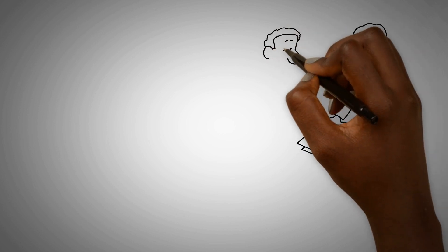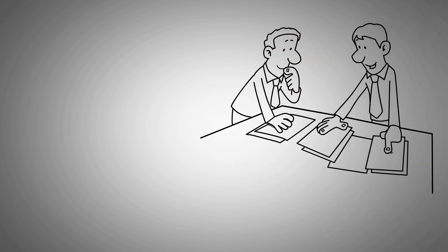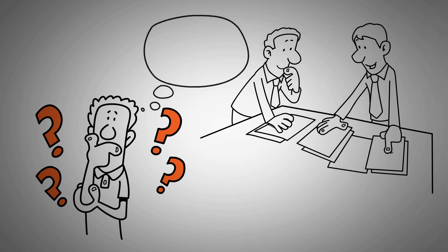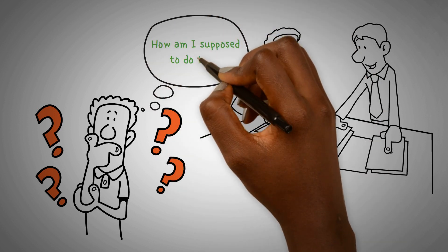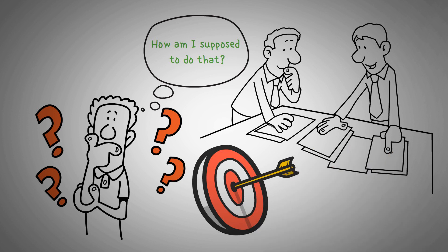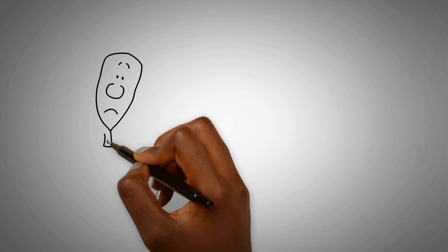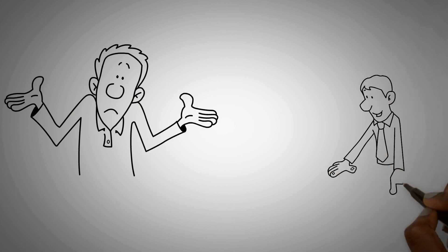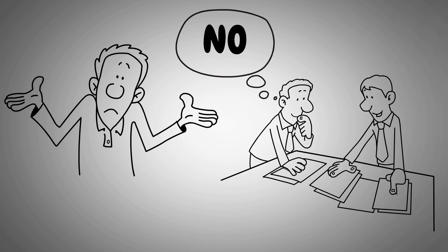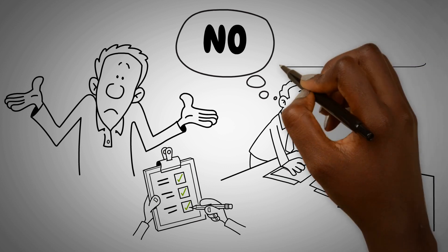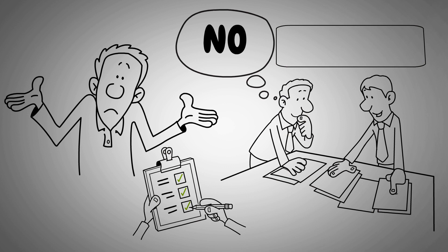Voss also suggests giving your counterpart a sense of control by asking open-ended questions with 'how' or 'what.' For example, if faced with an unreasonable price, you can ask, 'How am I supposed to do that?' to prompt them to come up with a solution. Surprisingly, Voss warns that a 'yes' response can be misleading — people might say it just to end a conversation. Instead, ask questions that prompt a 'no' answer, such as mislabeling their emotions or asking what they don't want, since saying no makes people feel in control.